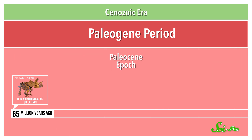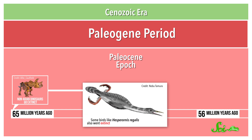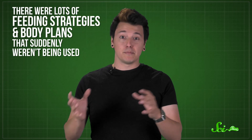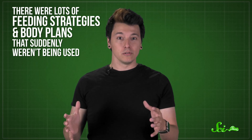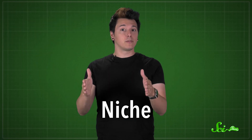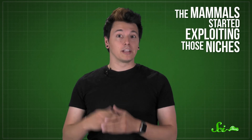The Paleocene, from about 65 to 56 million years ago, came right after the extinction of the non-avian dinosaurs. Even the ones that didn't die out — the birds — took a big hit on the diversity front. The dinosaurs left behind huge ecological shoes to fill. There were lots of feeding strategies and body plans that suddenly weren't being used. The place an organism fills in its environment is its niche, and usually two animals can't use the same one at the same time. With the dinosaurs gone, the mammals started exploiting those niches — that's why mammals expanded so much in diversity during the Cenozoic, even though they'd existed since the early Mesozoic.